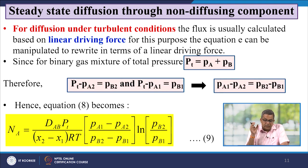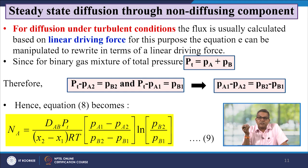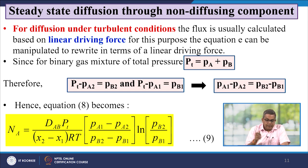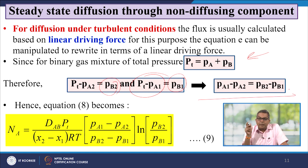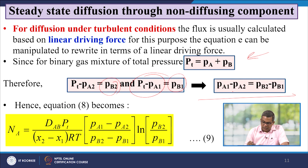For diffusion under turbulent conditions, the flux is usually calculated based on a linear driving force. For this purpose, the equation can be rewritten in terms of a linear driving force. Since for a binary gas mixture the total pressure PT equals pA plus pB, therefore PT − pA2 equals pB2 and PT − pA1 equals pB1. This leads to equation number 9.